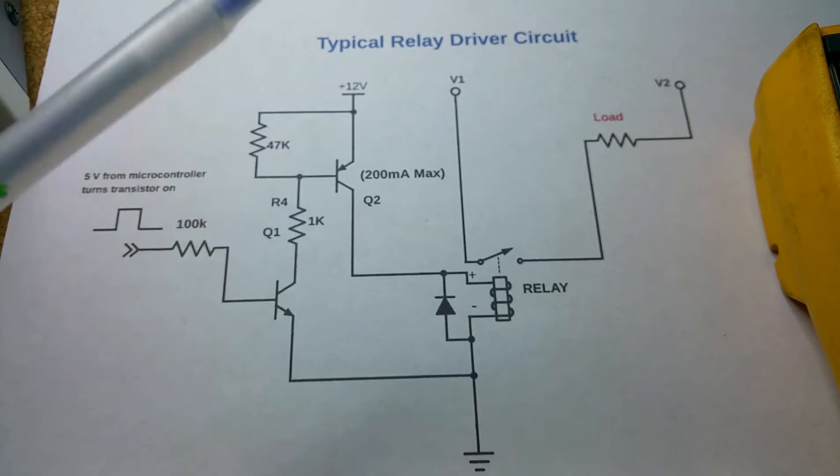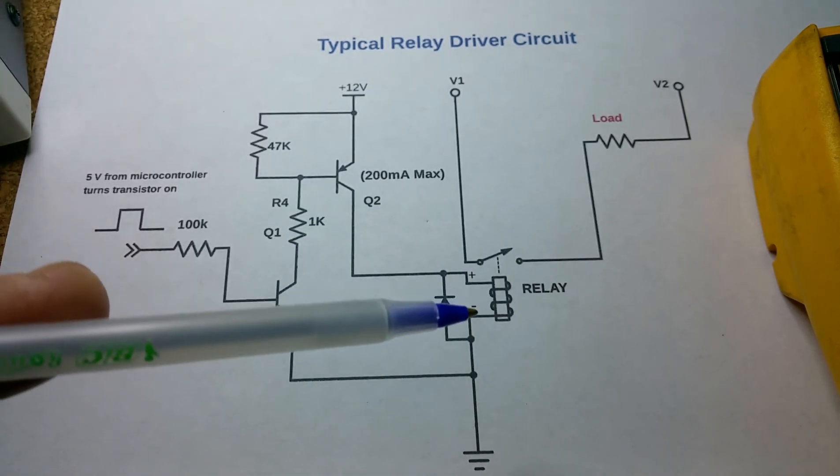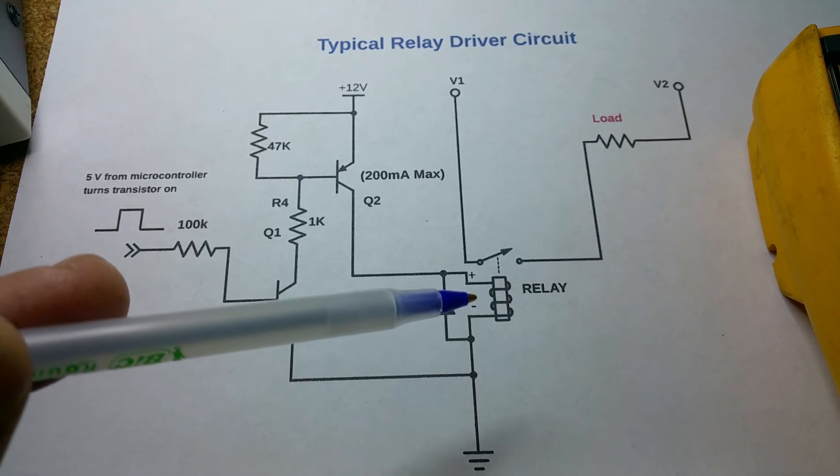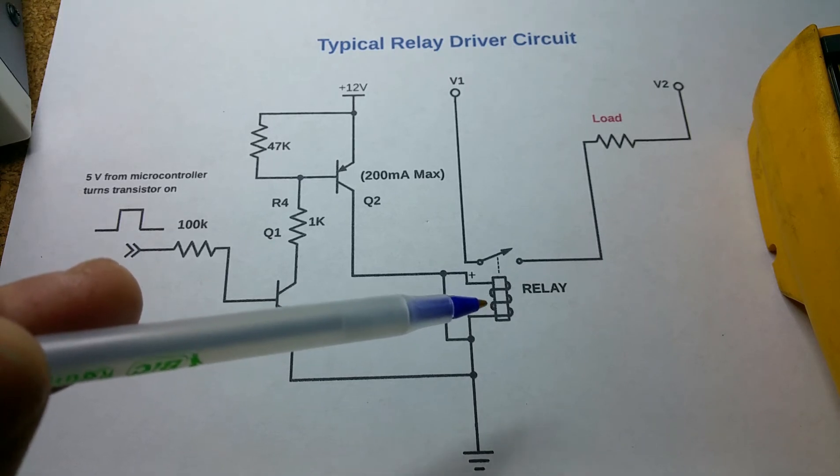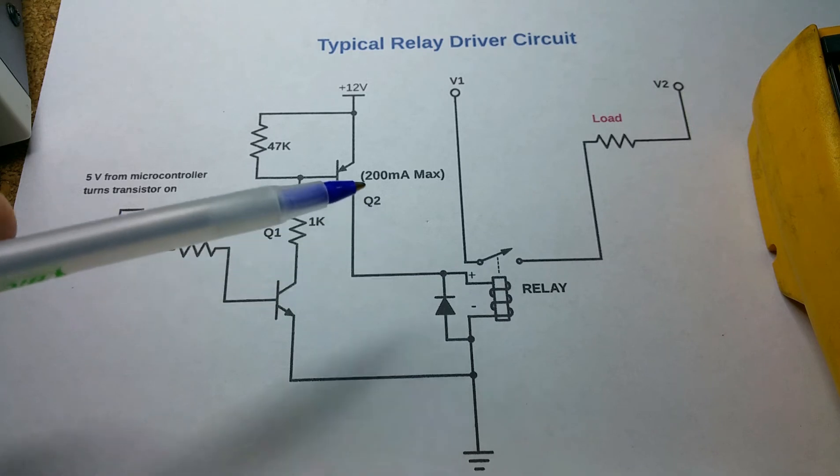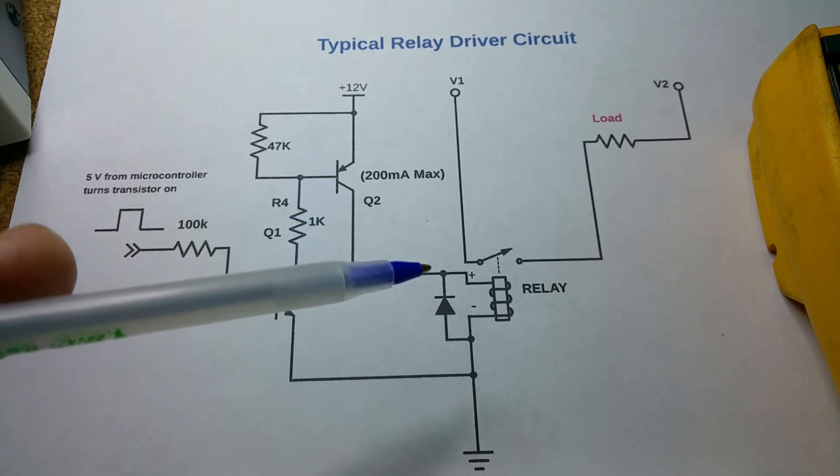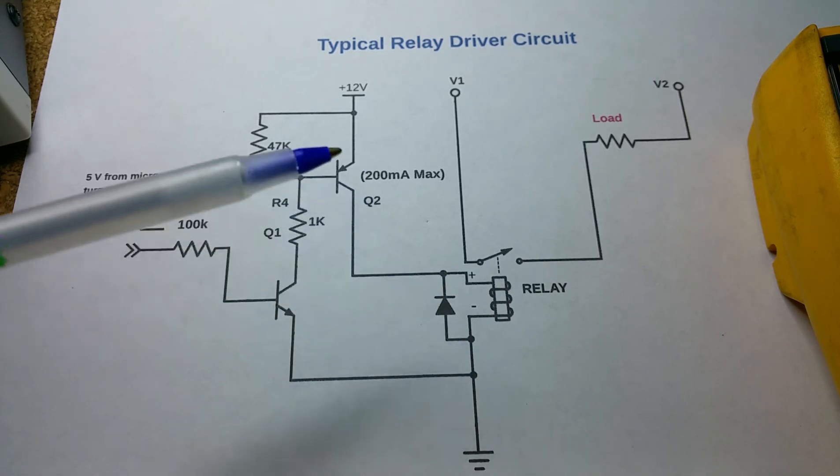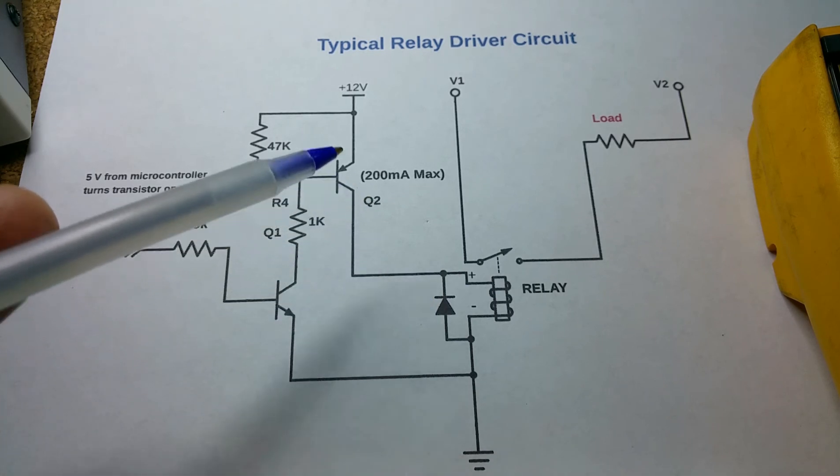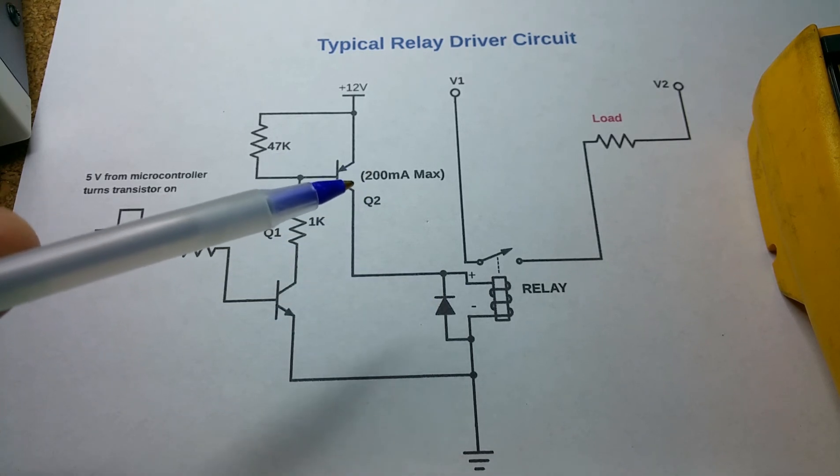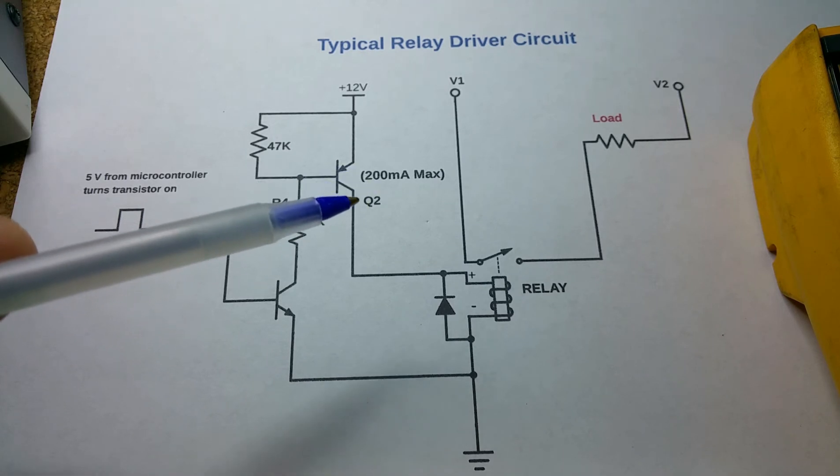On the other hand, if you put a relay in there and you use one with a lower coil resistance, you're requiring that transistor to supply more current, which could be a bad thing. This particular transistor used here—and it's common in a lot of boards—is 2N3906, which is 200 milliamps.